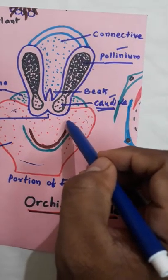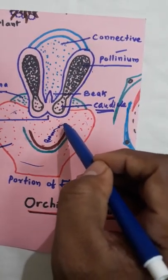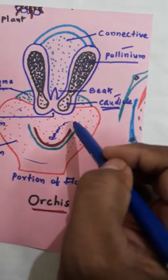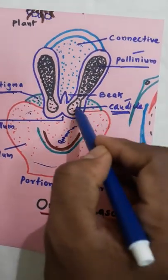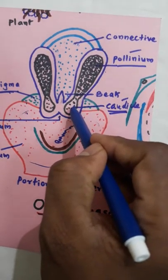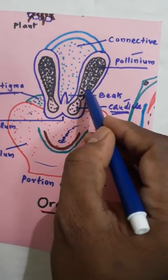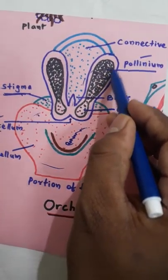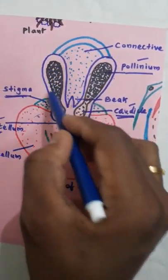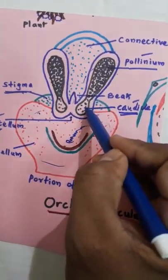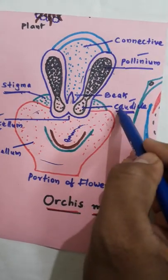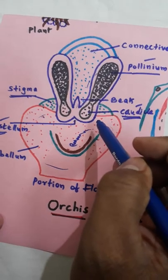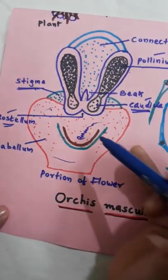When the insect searches for nectar, during the searching time, the pollinia has fixed to the insect by the help of caudicle. The caudicle nature is sticky nature. It is the pollinium. Pollinium means group of pollen grains. The pollinium has at the bottom one sticky nature structure is there. That is caudicle. This caudicle attached to the insect, honey bee. So the pollinium is pulled out.